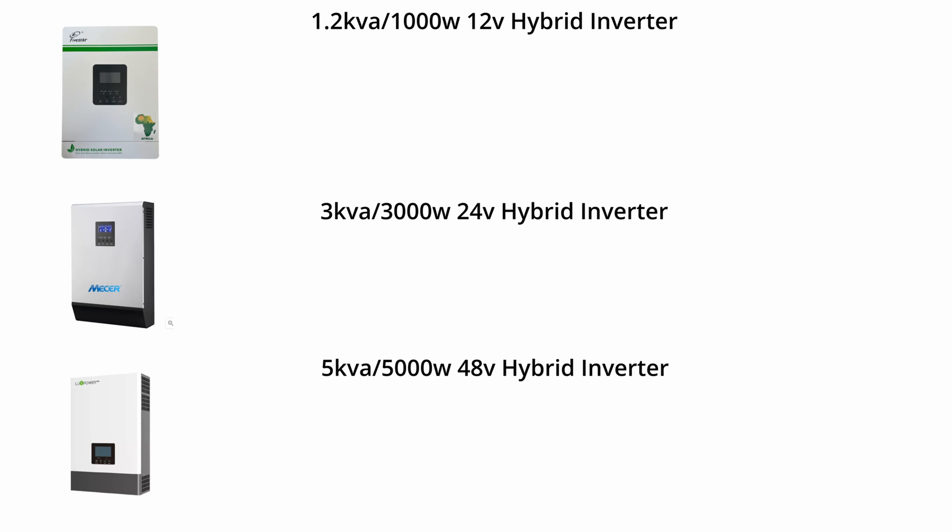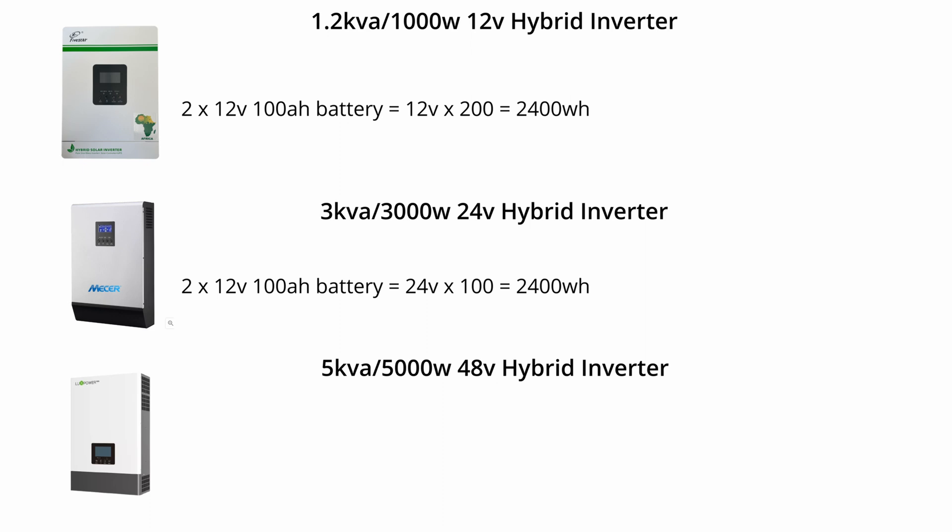Once you switch from a 12 volt to a 24 volt system: with the 12 volt system running two batteries in parallel you'd get 2400 watt hours. With a 24 volt system you already have two batteries, so two batteries times 100 amp hours equals the same amount of time — 2400 watt hours.